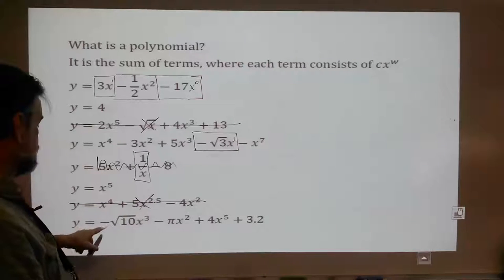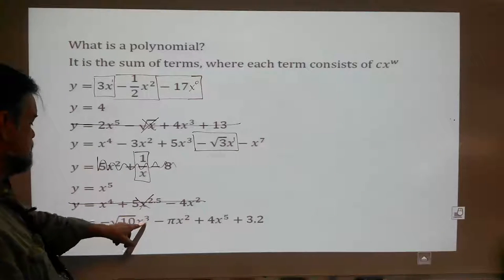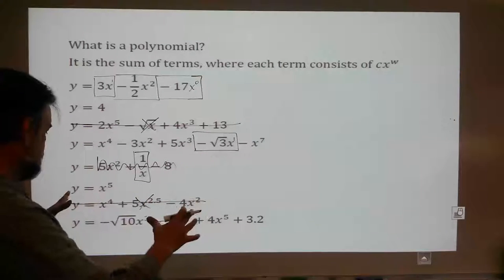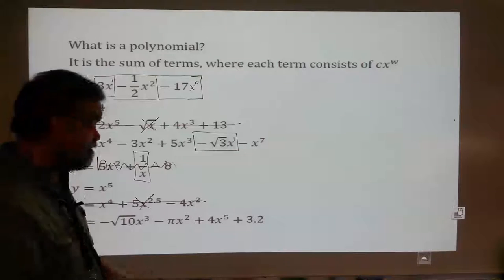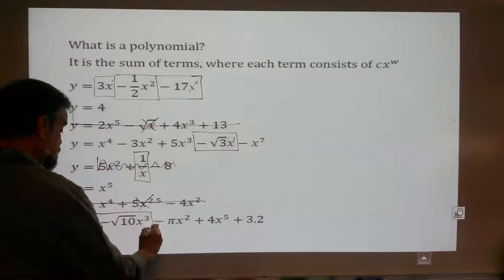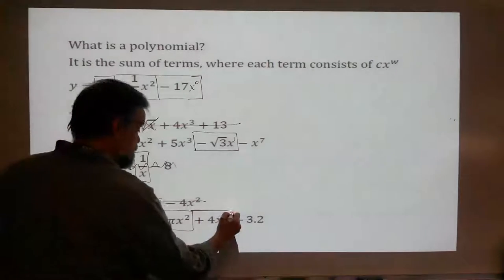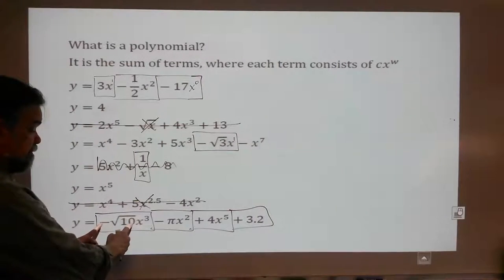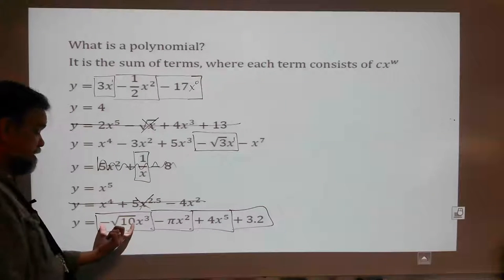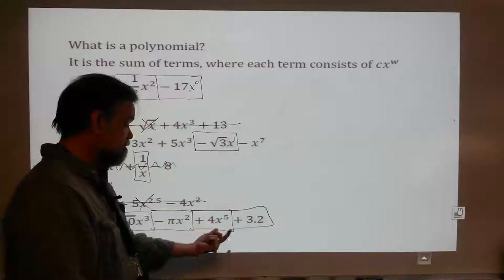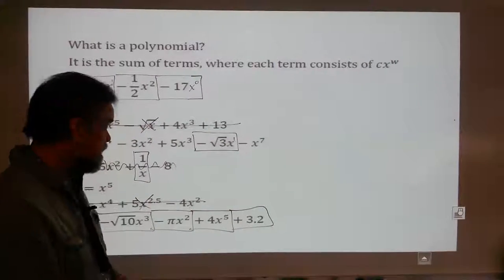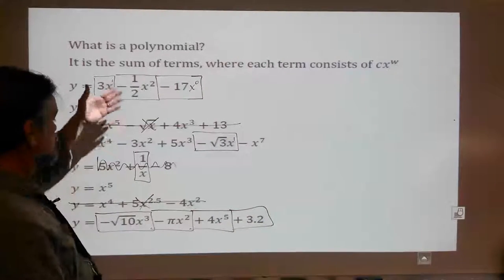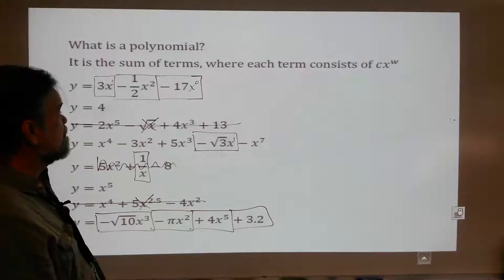Let's look at this last one. y equals negative square root of 10 times x cubed minus pi x squared plus 4x to the 5th plus 3.2. Weird stuff going on here, but it's completely legitimate. Each term has a coefficient which is a real number — like negative square root of 10, or negative pi, or positive 4, or positive 3.2 — and each one has x to a whole number power, this one being x to the 0 power. So those are our polynomials.